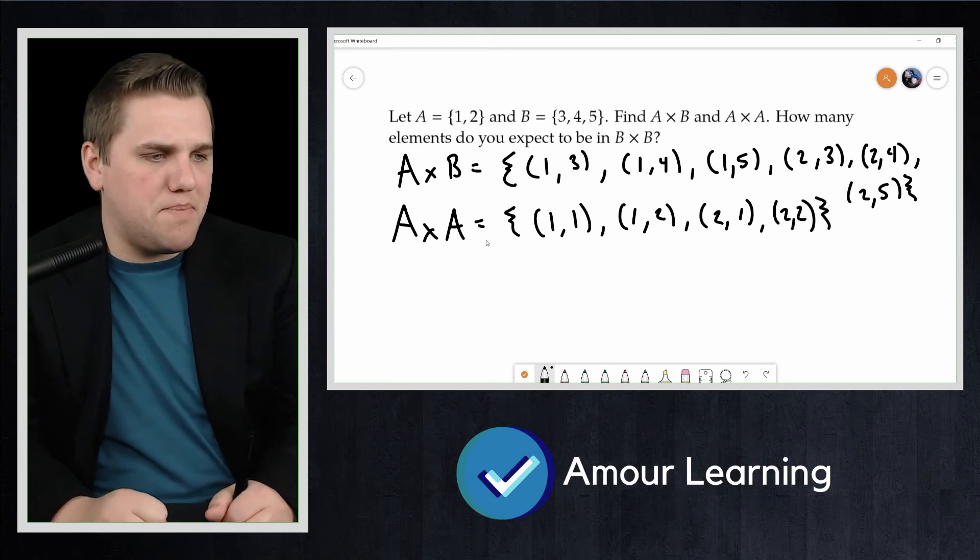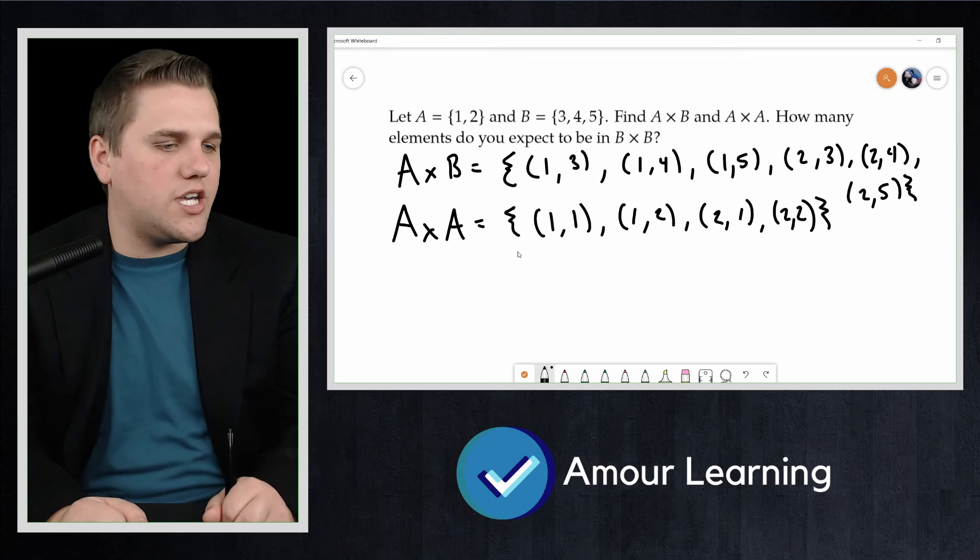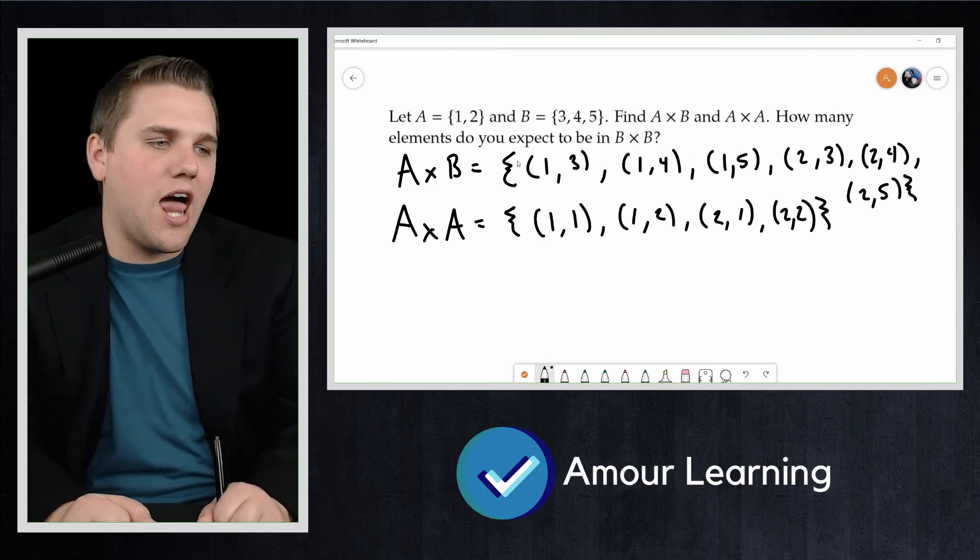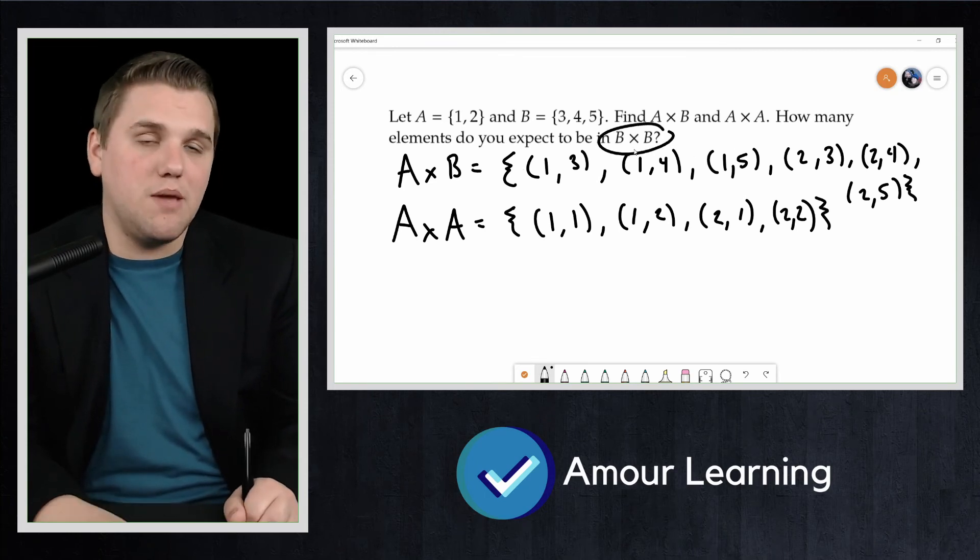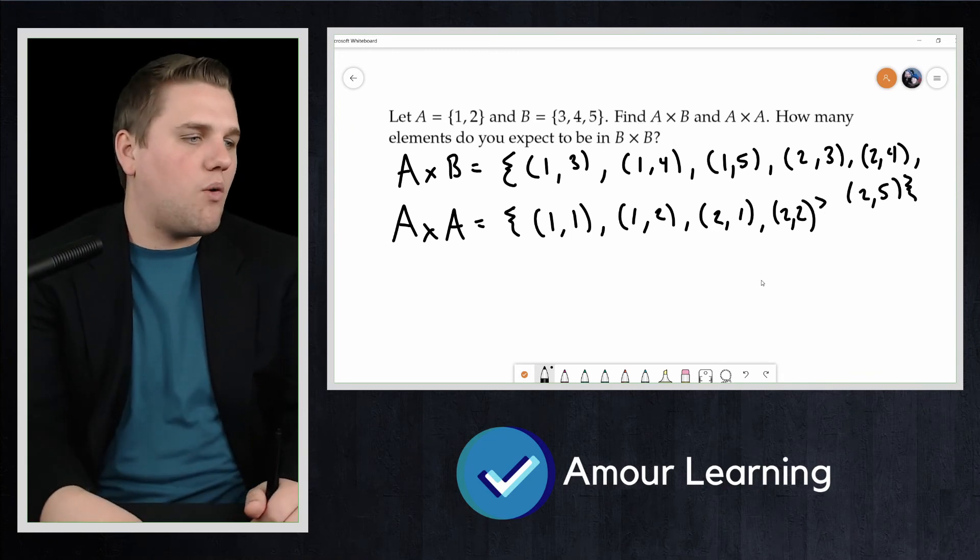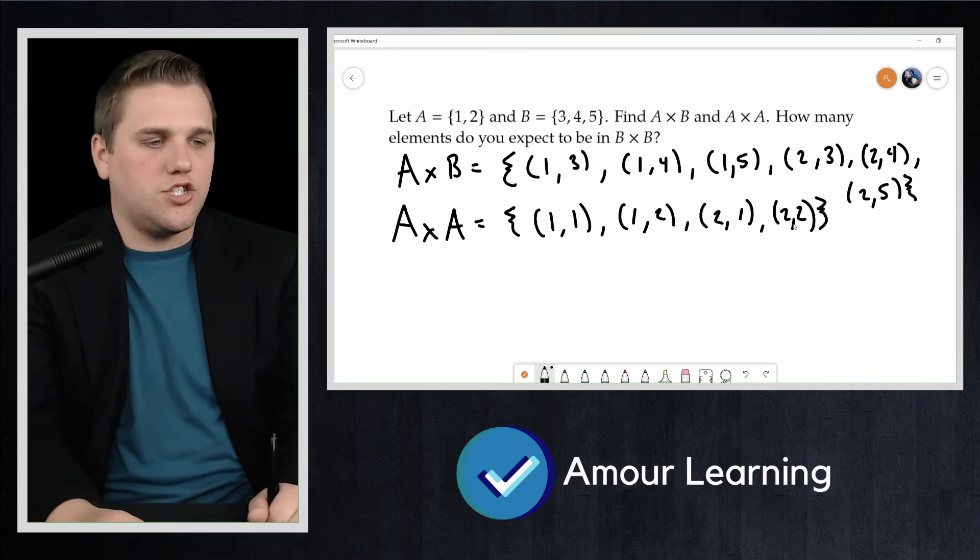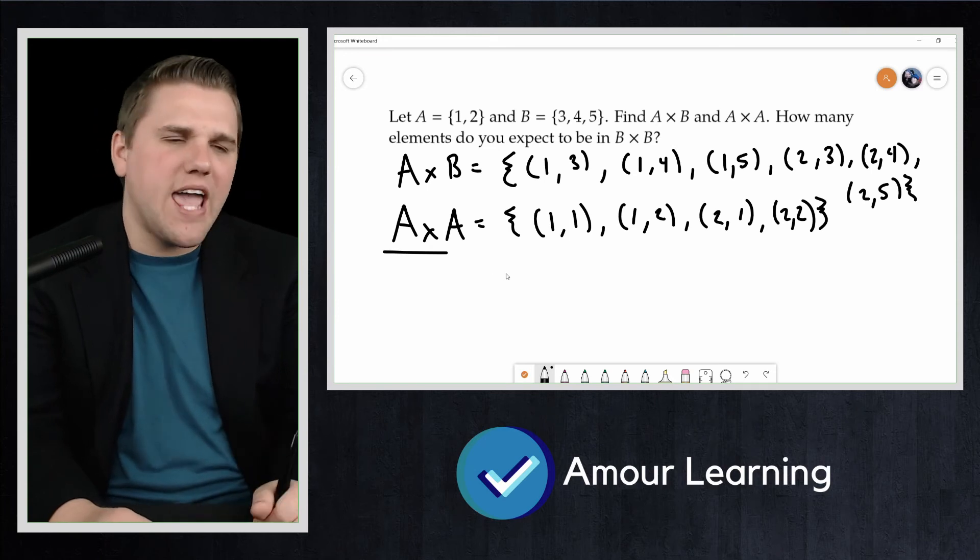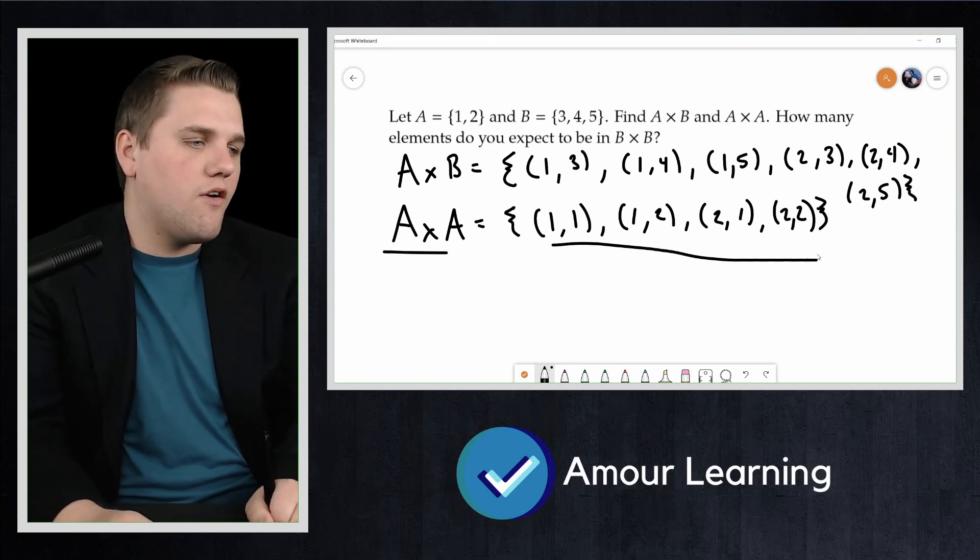And then what about B cross B? Well, if you notice here, if we're trying to figure out how many elements that we expect to be in B cross B, let's try to not figure out what B cross B is first. Instead, let's look at what we notice with these two sets. With A cross A, how many elements are there? Well, 4.